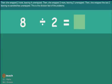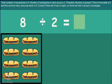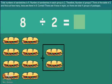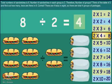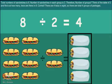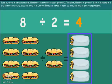This is the division fact of the problem: total number of sandwiches divided by number of sandwiches in each group gives the number of groups. Think of the table of 2 and find how many 2s are there in 8. There are four 2s in 8, so there are 4 groups or packages total.